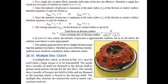In uniform pressure theory, the intensity of pressure is approximately uniform. When we have old clutches, we use uniform wear theory. Uniform pressure theory gives higher friction torque. Comparing the equations of uniform pressure theory and uniform wear theory, the torque in uniform pressure theory is about 33% more.